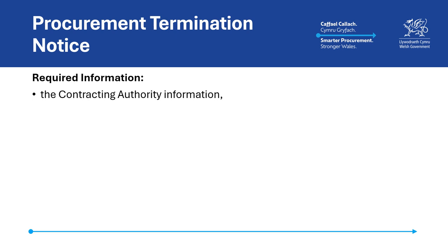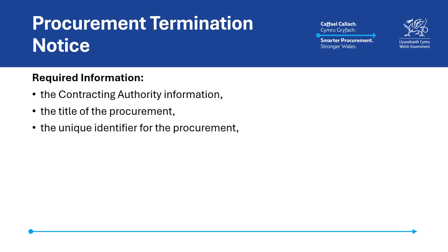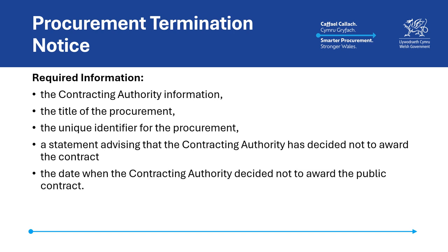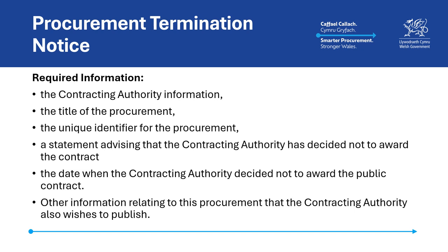The required information is: information about the contracting authority; the title of the procurement; the unique identifier relating to the procurement; a statement to the effect that following the publication of a tender or transparency notice in respect of a contract, the contracting authority has decided not to award the contract; and the date that the decision was taken not to award the contract. Nothing in this regulation prevents a contracting authority from publishing other information relating to the same procurement in the procurement termination notice.